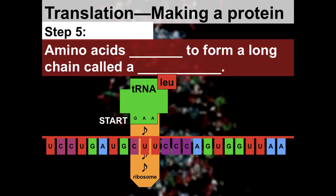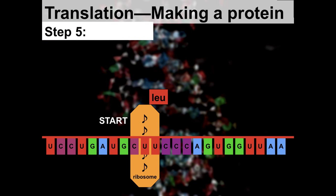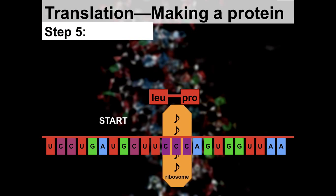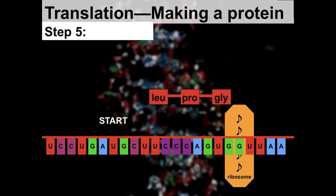The tRNA tells the ribosome which amino acid to add to the growing chain. You'll see it dropping off amino acids — the ribosome connects them to form a long chain called a protein. Different transfer RNAs bring in those amino acids based on that three-letter code. The names of amino acids shown are just the first three letters of their names.